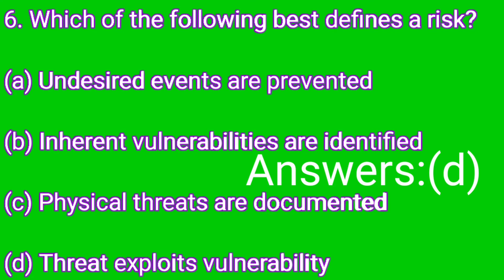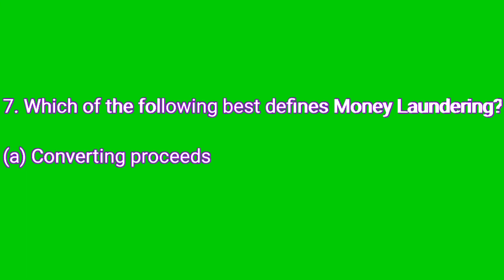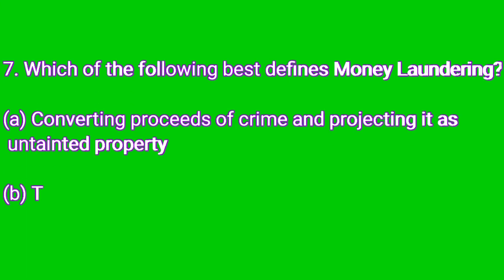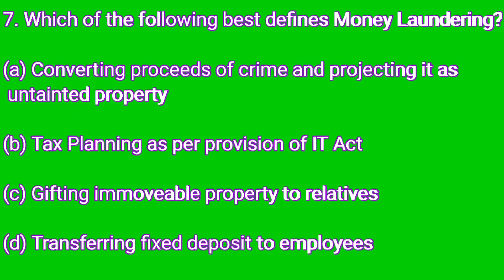Question number seven: which of the following best defines money laundering? Option A: Converting proceeds of crime and projecting it as untainted property. Option B: Tax planning as per the provisions of IDS. Option C: Transfer of mobile property to employees. The correct answer relates to converting proceeds of crime.